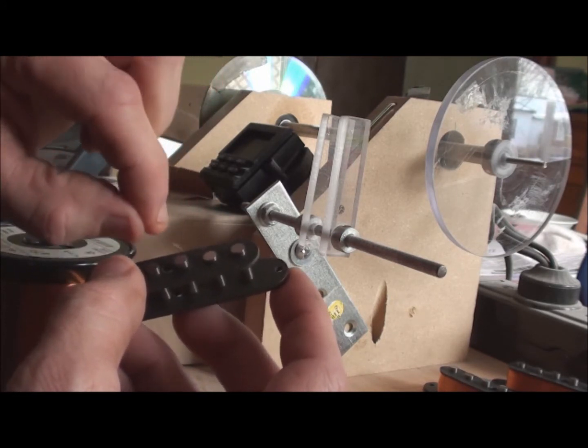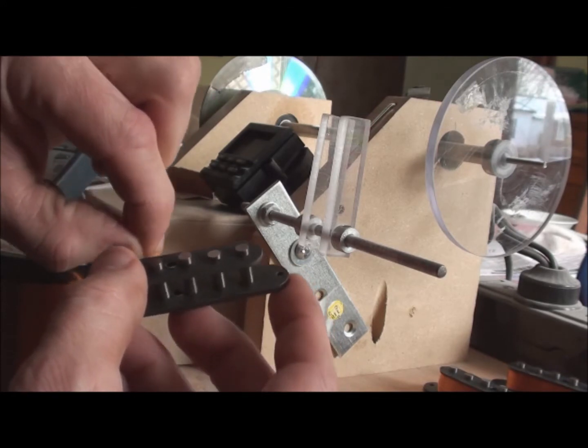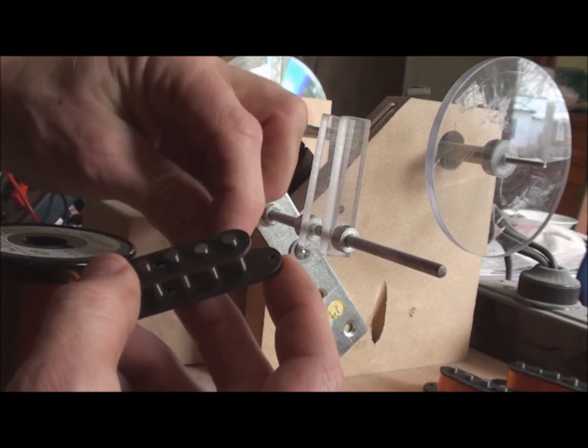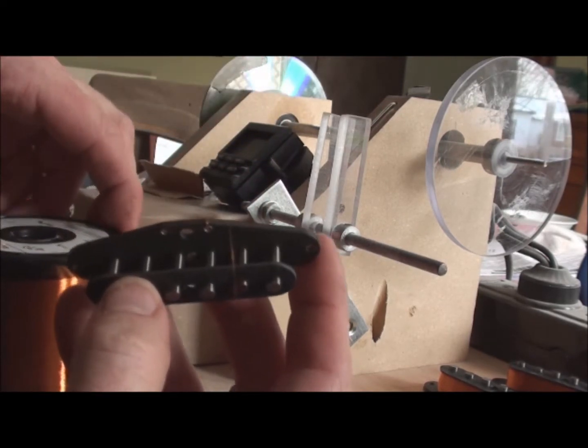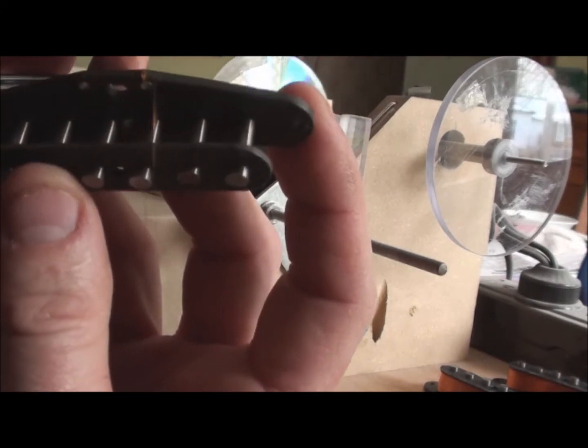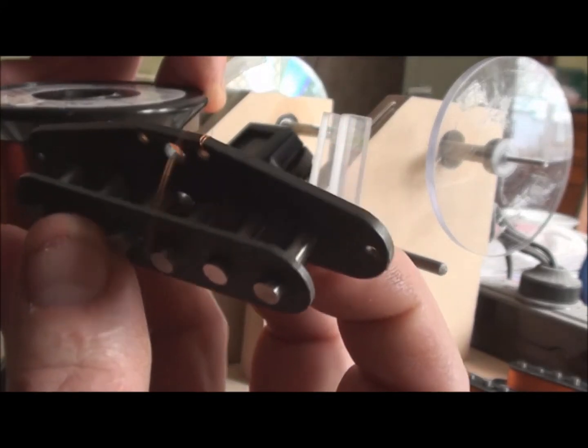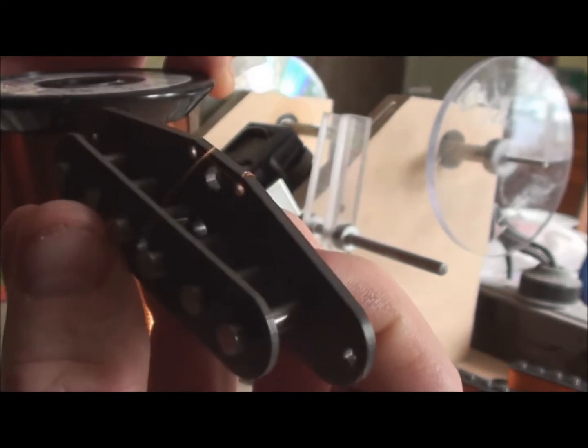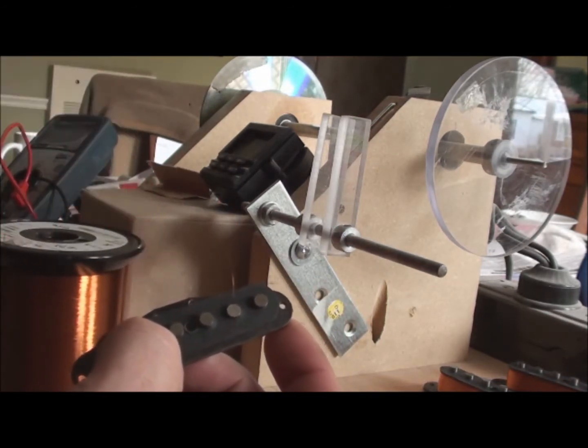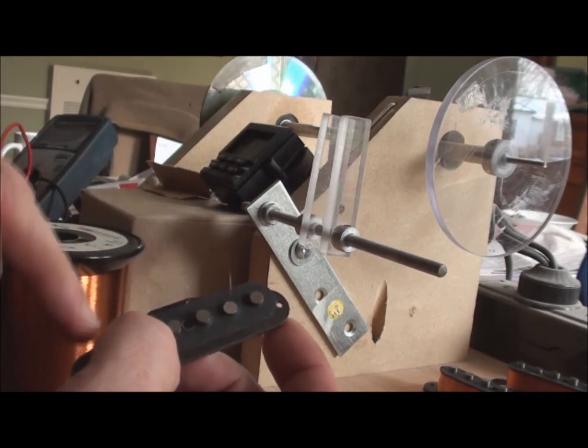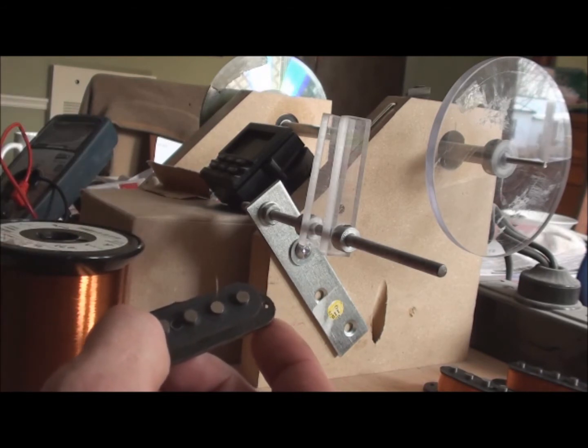Once I get a few wraps under this, I'll mount it onto the bobbin. There we go, got a successful loop in there now. I'll do about eight of those and it will start to build up. The start eyelet for all the pickups will have the black lead and the final wrap will have the white lead. That way I know what I'm doing when I go to wire it up.